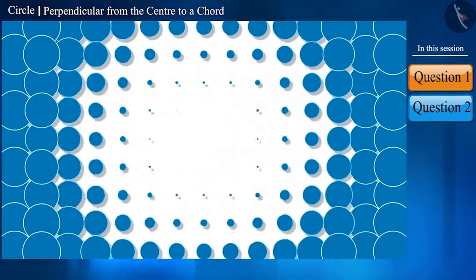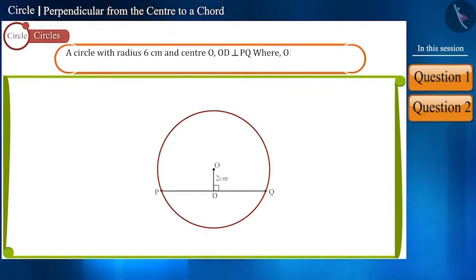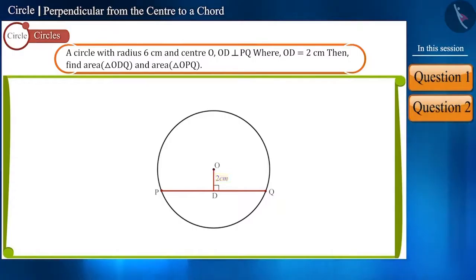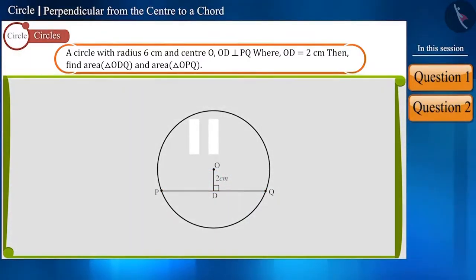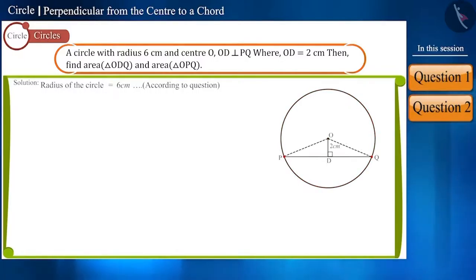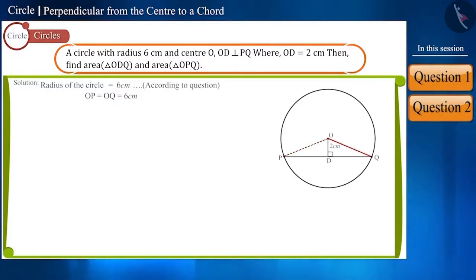Let's move ahead and solve our next question. A circle with radius 6 cm and center O has a perpendicular OD drawn on chord PQ, where the length of OD is 2 cm. Find the area of triangle ODQ and triangle OPQ. The radius of the circle is 6 cm, and since OP and OQ are line segments from the center to points on the circle, they are radii. Therefore, the length of OP and OQ will be 6 cm.